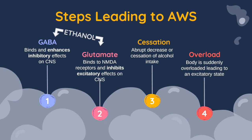The steps that lead to AWS: ethanol works in two ways. It works on GABA, the inhibitory neurotransmitter in our body, by binding to GABA receptors and enhancing those inhibitory effects on the CNS. It also binds to NMDA receptors, where glutamate binds, and inhibits the excitatory effects on the CNS. So ethanol enhances inhibitory effects while also inhibiting excitatory effects on the CNS.